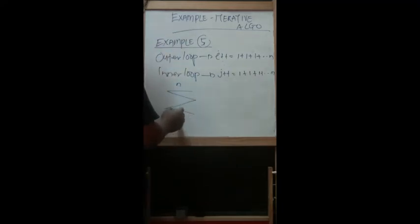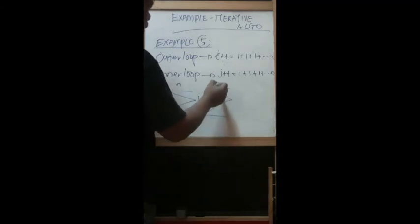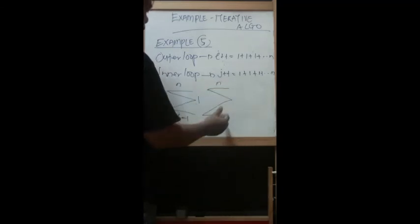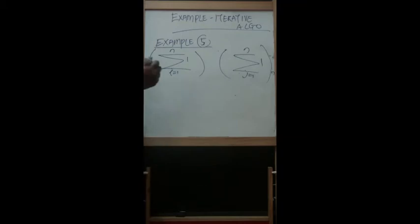And this actually start with the I. I equal to 1 and increase by 1. And here, the second loop, the inner, also N here until the end is the same. And J equal to 1 until the 1.